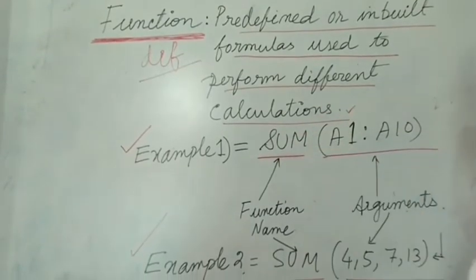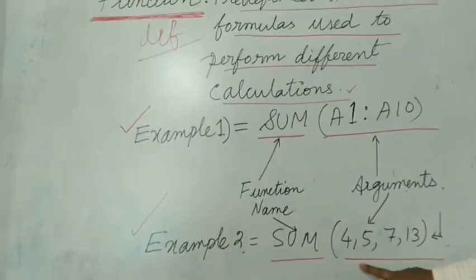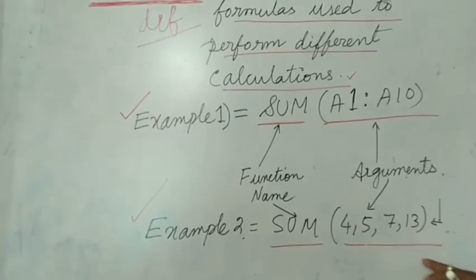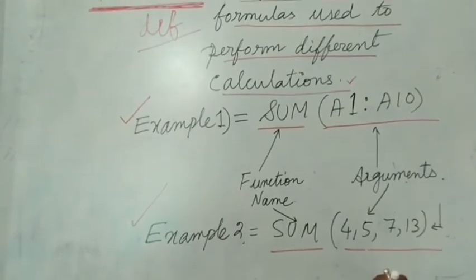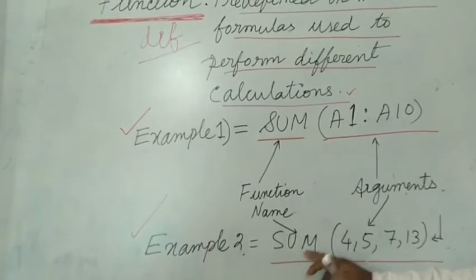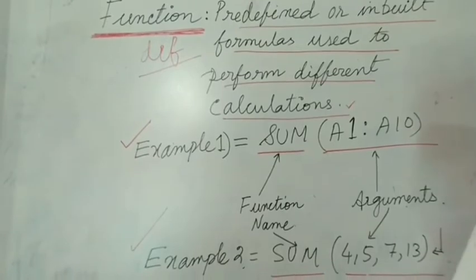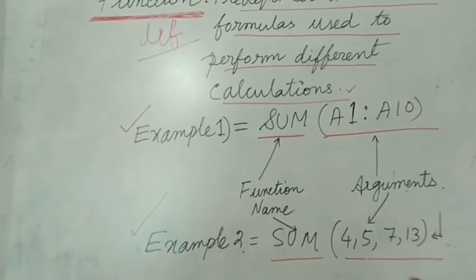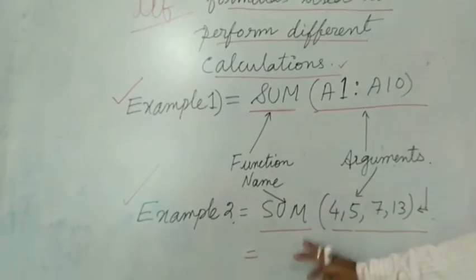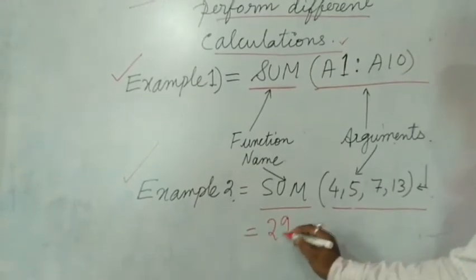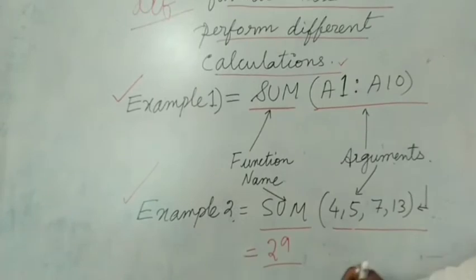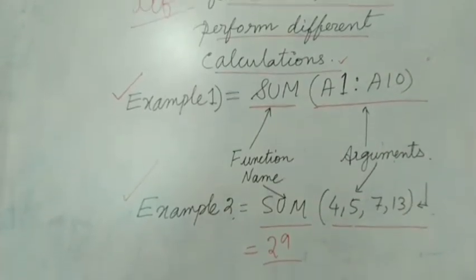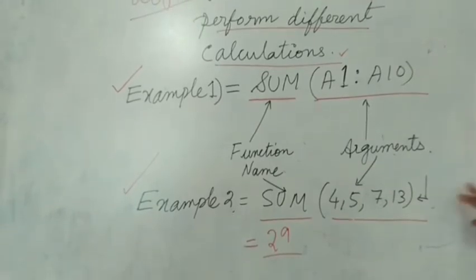In example two: =SUM(4,5,7,13). I want to find the sum of these numbers. Here also we have two parts — the function name and the arguments. MS Excel will find out the sum and display it. The answer comes as 29. Here MS Excel does the addition automatically, and you can write as many numbers as you like.